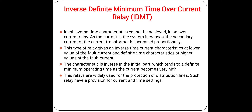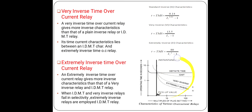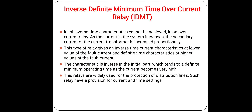Generally, an inverse time characteristic is obtained if the value of the PSM — Plug Setting Multiplier — is below 10. The topic of PSM, TSM, and their numericals will be covered in the next lecture. For values of plug setting multiplier between 10 and 20, the characteristics tend to become a straight line, that is, towards the definite time characteristics. In the next slide we will see the combined characteristics of all overcurrent relay types.